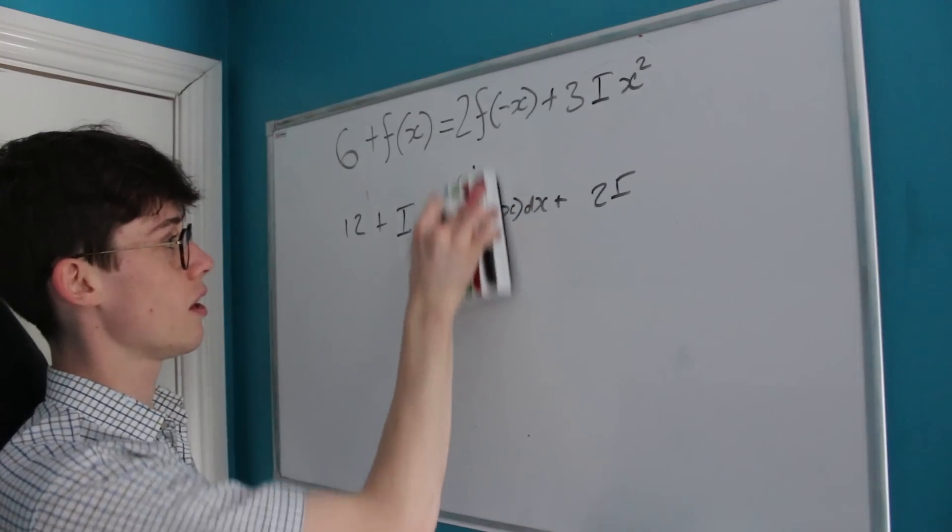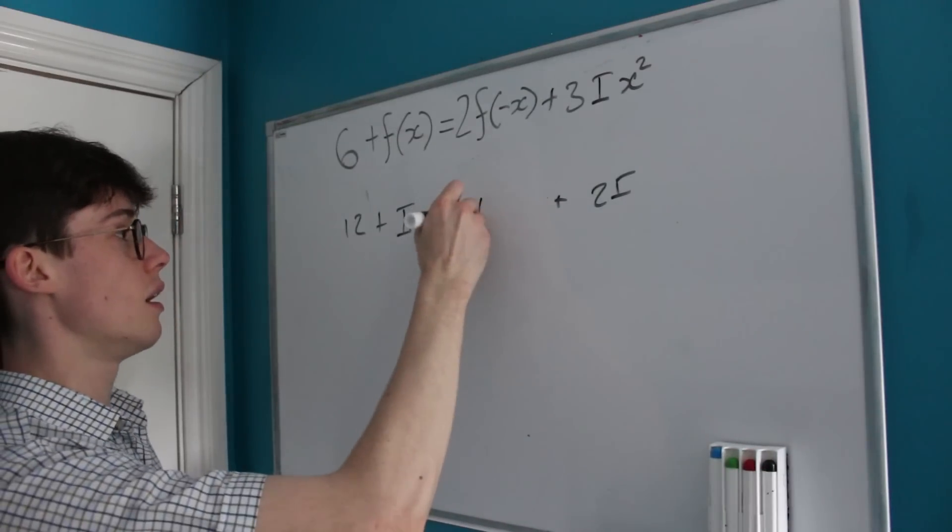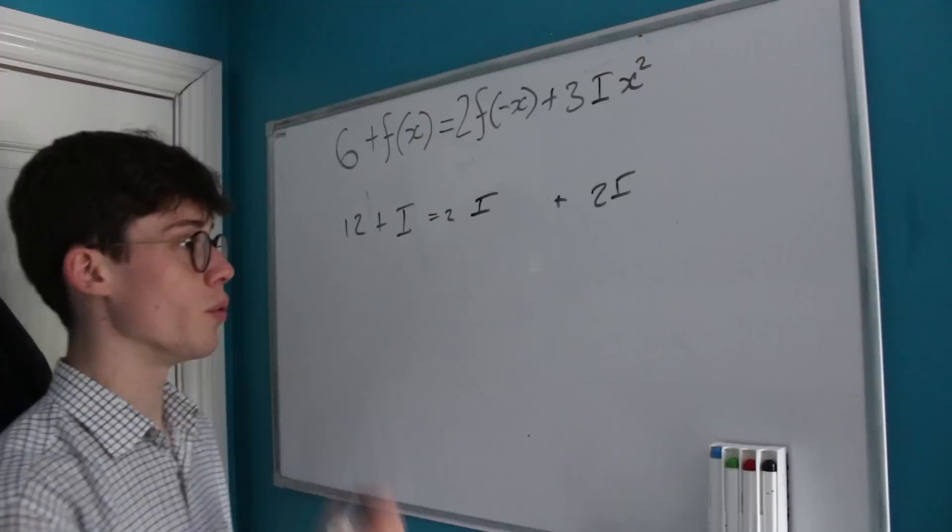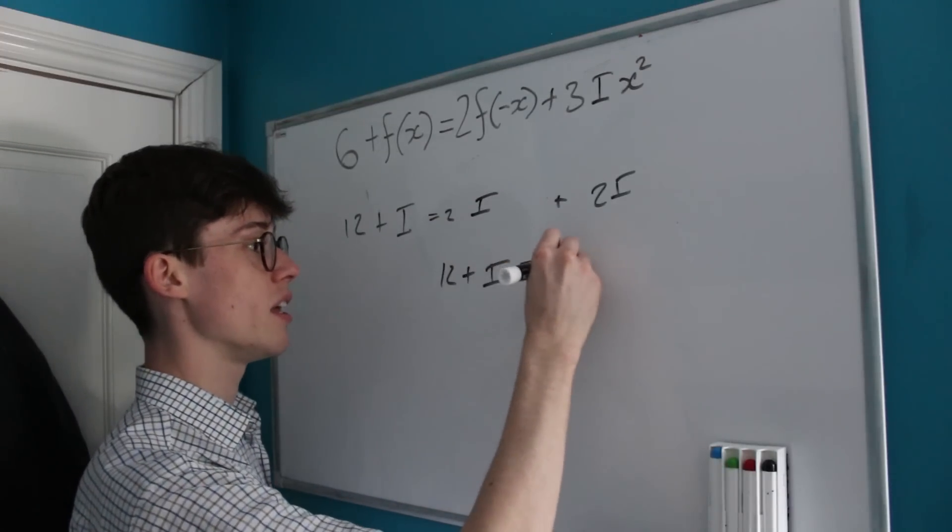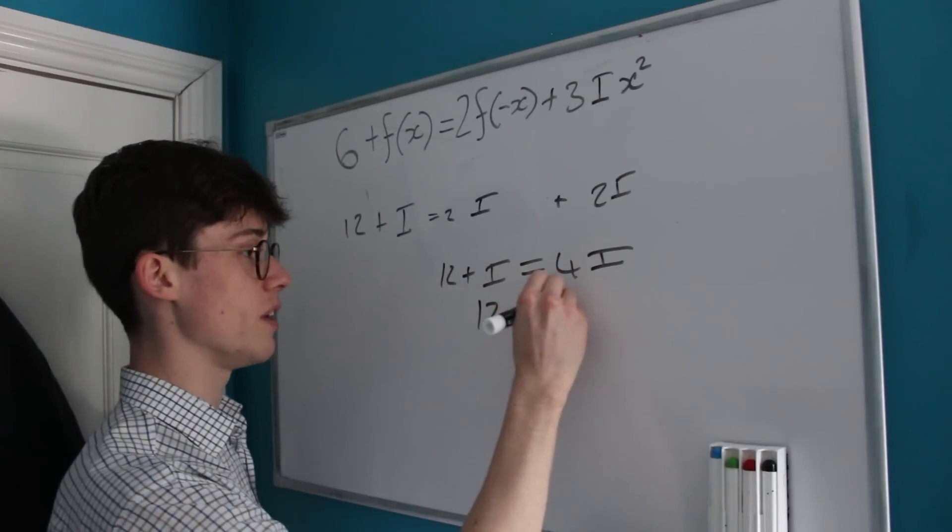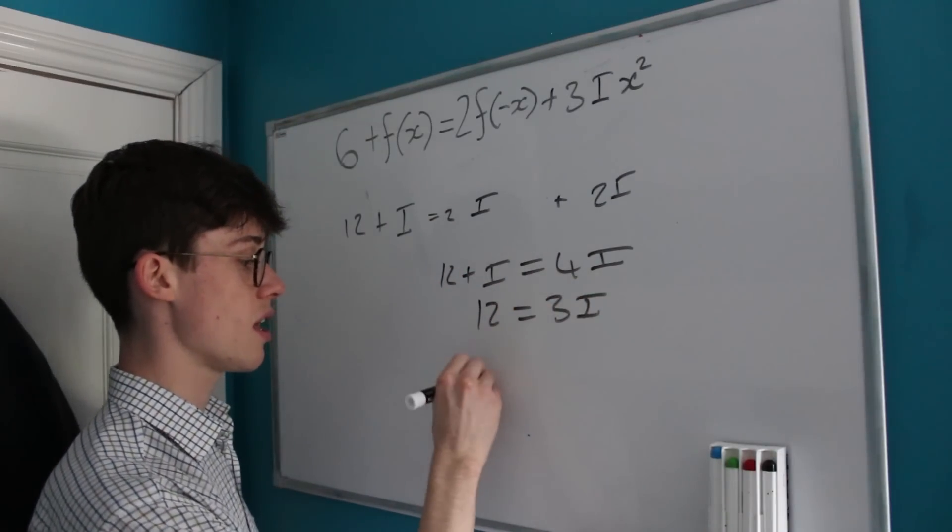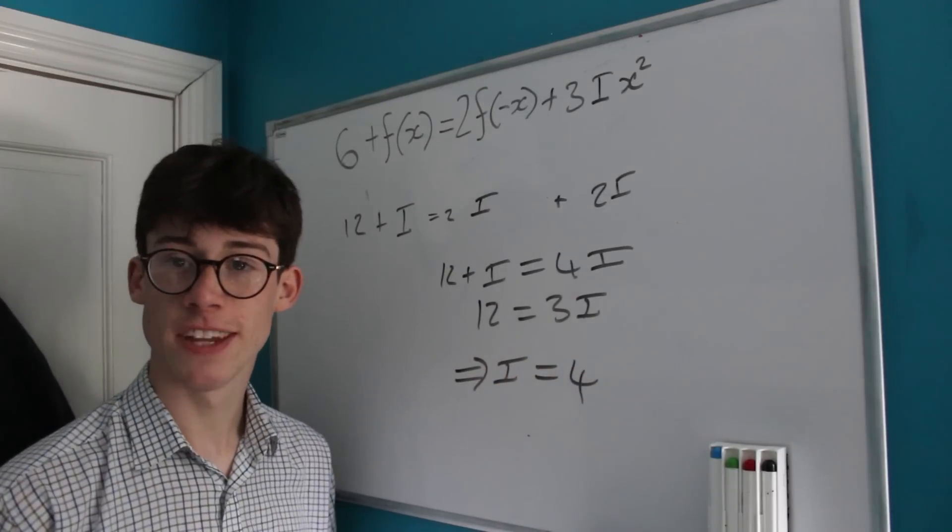We've solved it, right? Because that means that 12 + I = 4I, which means that 12 = 3I, which means that our integral must be equal to 4.